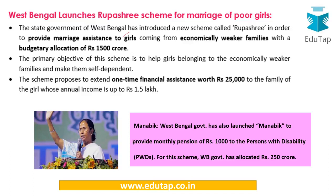There is another important scheme from West Bengal — Kanyashree — which is about the education of the girl child to prevent early marriage. Now West Bengal has come up with the Rupashree Scheme, which is related to marriage assistance for girls from economically weaker families, and a budgetary allocation has been made for it. The Kanyashree scheme, running since 2013, has received appreciation from UNICEF. Additionally, the Manabik Scheme provides a monthly pension of Rs. 1,000 to persons with disabilities. These are three very important schemes from West Bengal.